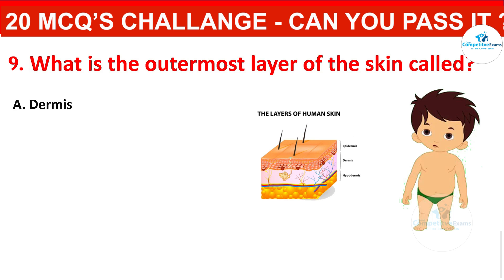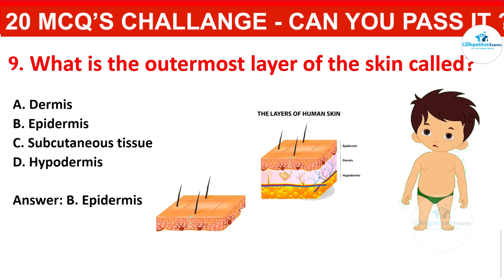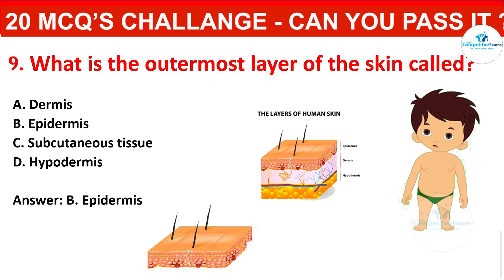What is the outermost layer of the skin called? Your options are: dermis, epidermis, subcutaneous tissue, or hypodermis. The correct answer is epidermis. The epidermis is the outermost layer of the skin, providing a protective barrier against external factors.